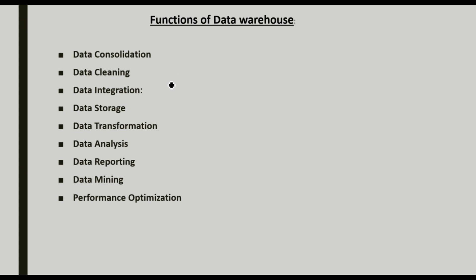The functions of a data warehouse include: data integration, data storage, data transformation, data analysis, data reporting, data mining, and performance optimization. We are just going through an overview of these functions here. In later videos, we will discuss each function in detail.